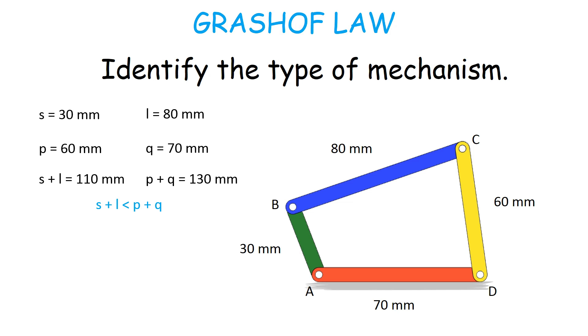Clearly, the sum of the lengths of the shortest link and the largest link is less than the sum of the lengths of the other two links and hence the given linkage satisfies the Grashof criterion.